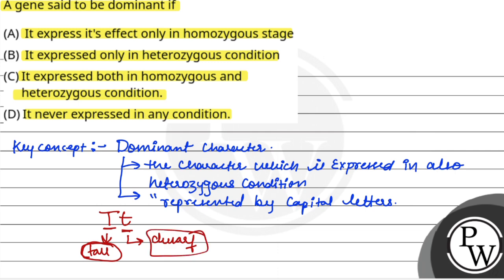Here are two features, tall and dwarf. But tall being a dominant character, it doesn't express the dwarf. So a gene is said to be dominant if it is expressed both in homozygous and heterozygous condition.